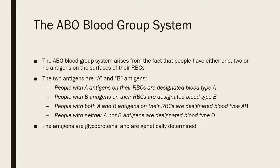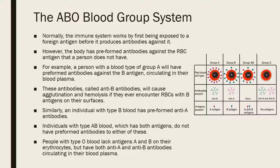These antigens are glycoproteins and are genetically determined — inherited from parents, with each parent contributing one gene. The A antigen gene and B antigen gene are dominant, while the O gene is recessive. Normally the immune system requires prior exposure to a foreign antigen before producing antibodies, but this is not the case for the blood group system.